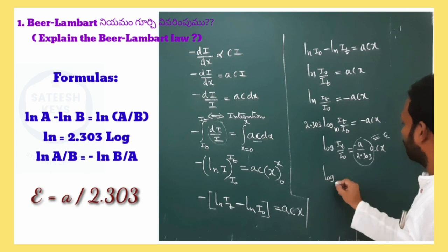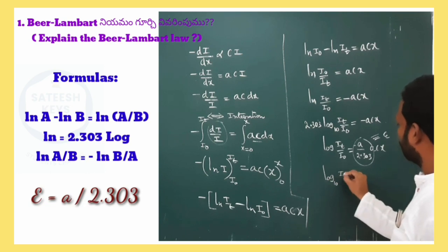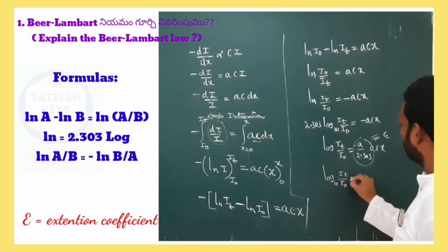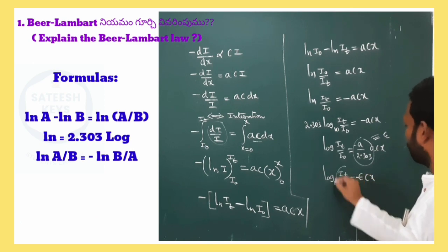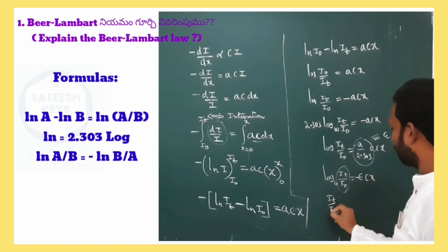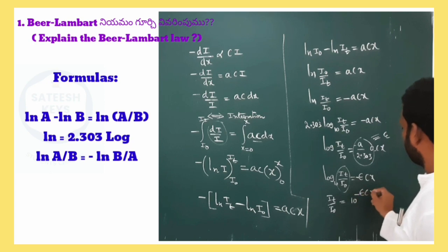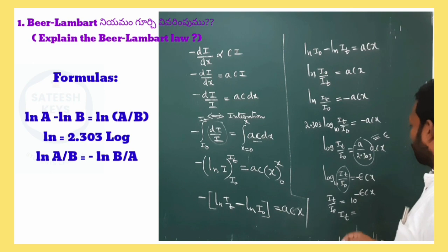So log10 it by i naught equal to minus epsilon cx. Therefore it by i naught is equal to 10 power minus epsilon cx. Multiplying with i naught: it equal to i naught into 10 power minus epsilon cx.